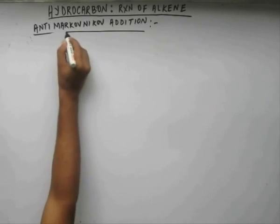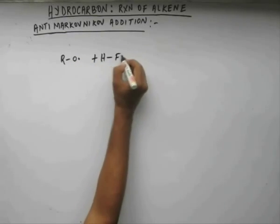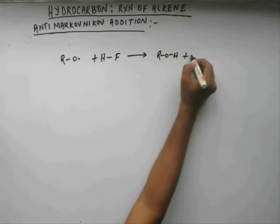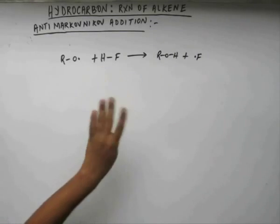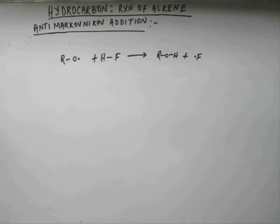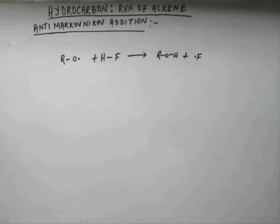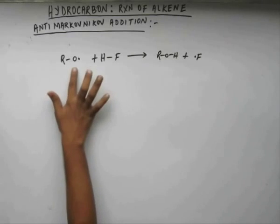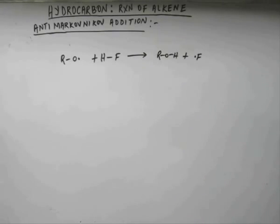The reason why HF shows no reaction is that the second step of chain initiation cannot occur — a fluorine free radical cannot be generated. This is because the HF bond is stronger than the O–H bond, so a strong bond cannot be broken to form a weaker bond. Furthermore, a fluorine free radical is more unstable than an oxygen free radical because fluorine is more electronegative, making electron deficiency on fluorine more unstable. So with HF, this kind of reaction does not occur, and we do not take HF in any kind of addition reaction.